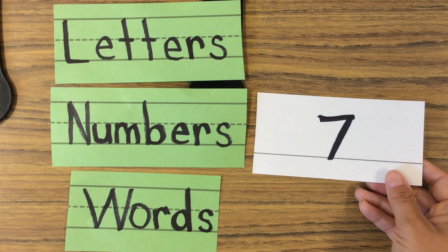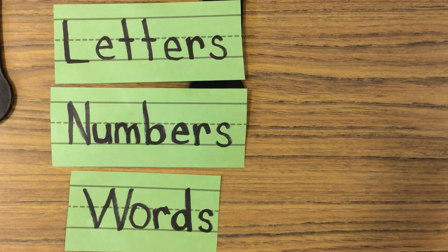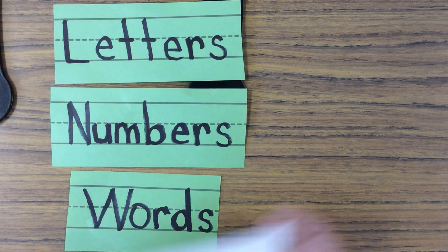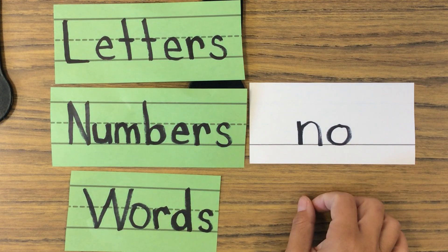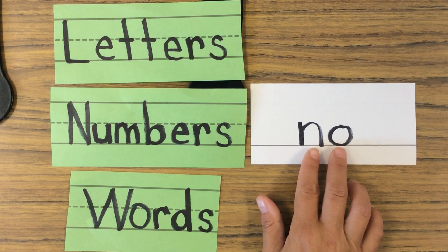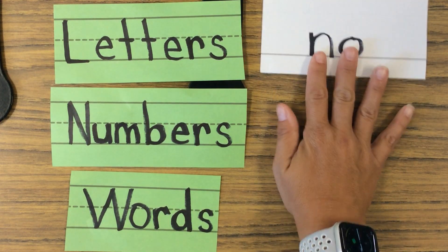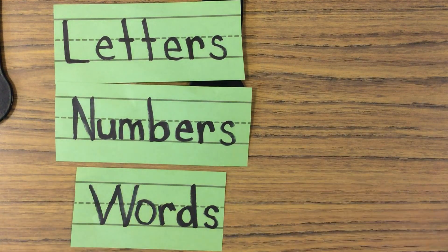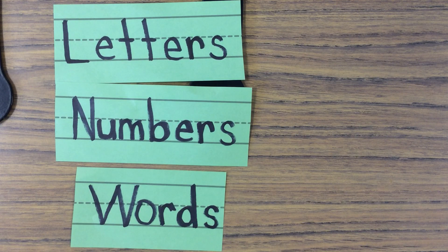This says seven. Yep, that's a number. This says no, so do you see the two letters? So it wouldn't go there, it's actually a word. It means I'm not going to do it.